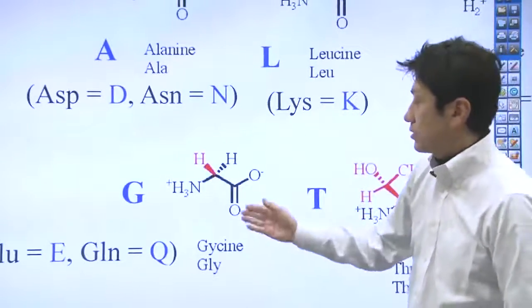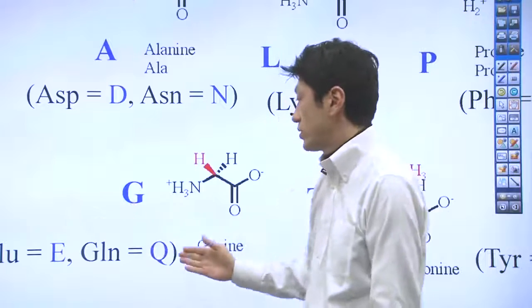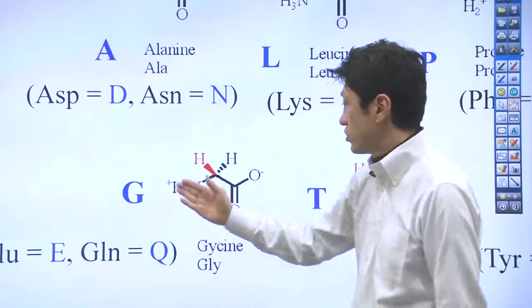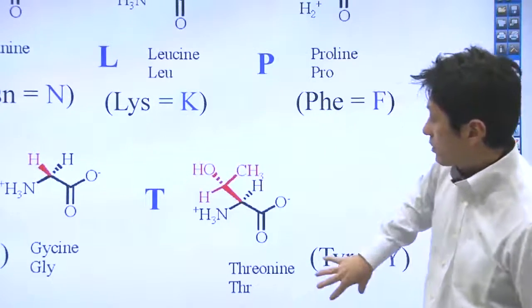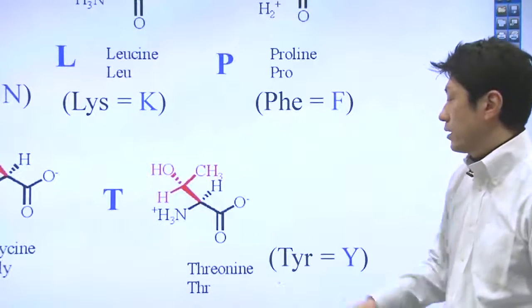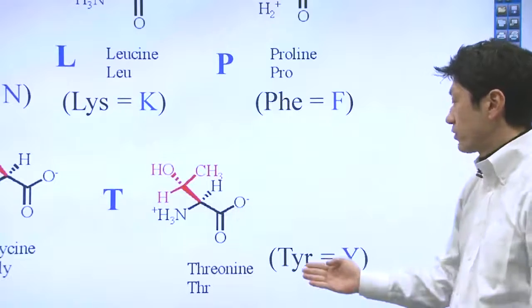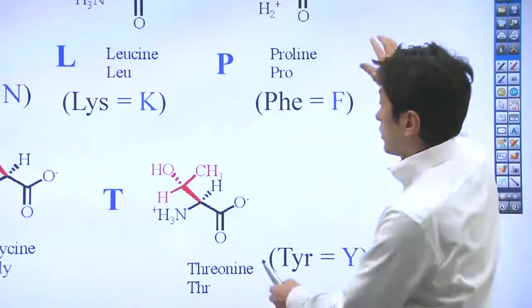Here is glycine. There are three amino acids that start with G, but we use G for glycine. Then, here's threonine. The same thing here. We don't use the T for tyrosine.